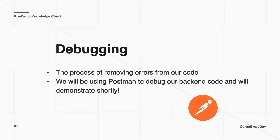Debugging is the process of removing errors from your code, and it's really annoying. Usually, you're writing code about 10% of the time and debugging the rest of the 90% of the time. It's going to be a big part of any coding class. We'll be using Postman to debug our back-end code, and we'll also demonstrate this later in the demo.